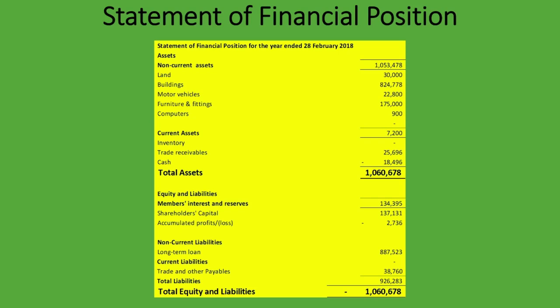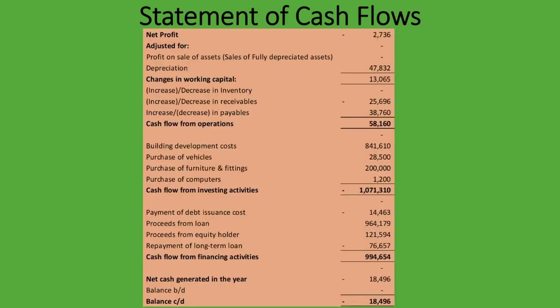The statement of financial position is pretty standard for most companies. As we said, it shows the assets, equity, and liabilities of the company. You can see it's written 'Statement of Financial Position for the year ended 28 February 2018' — it's a snapshot showing exactly what assets, equity, and liabilities the company has at that specific date.